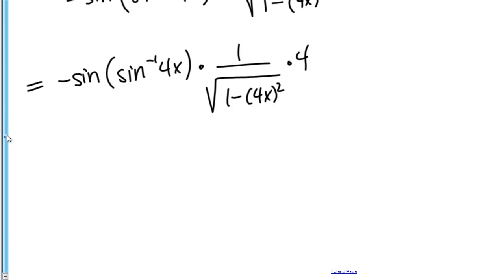So now all our derivatives are taken. Let's simplify this expression. Now this first part, the sine of the inverse sine of 4x. Since sine and inverse sine are inverses, then that actually cancels out really nicely. And I'm just left with negative 4x from that piece.